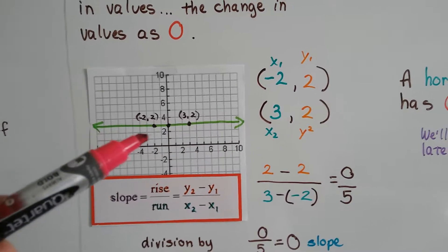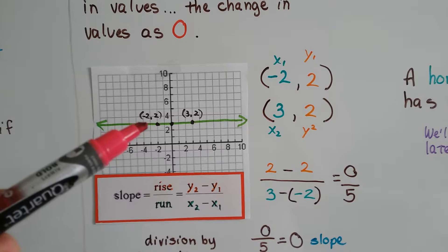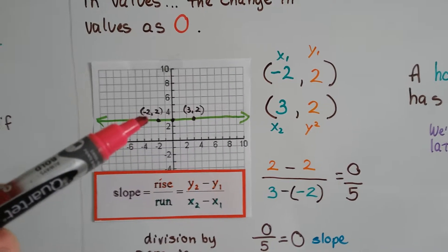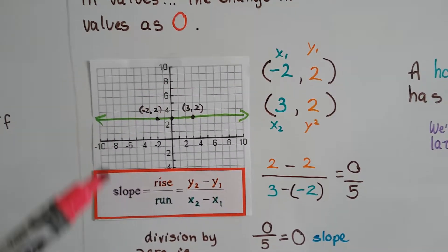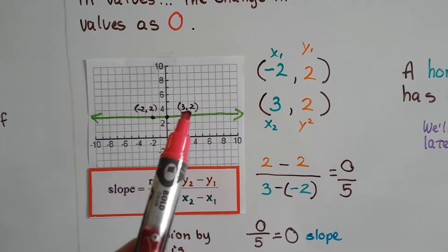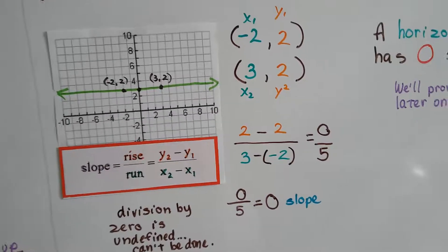We can pull these from left to right. We have negative 2, 2 as our x1, y1, and we have 3, 2 as our x2, y2. And we follow this formula.